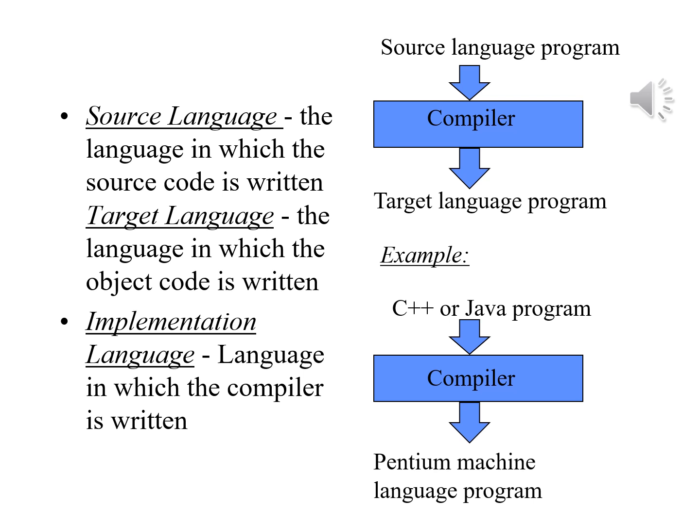In a case like this, the source language might be C++. The target language might be the machine language for Pentium-level processors. The implementation language might be, for example, Java, if that's what we are writing the compiler in.